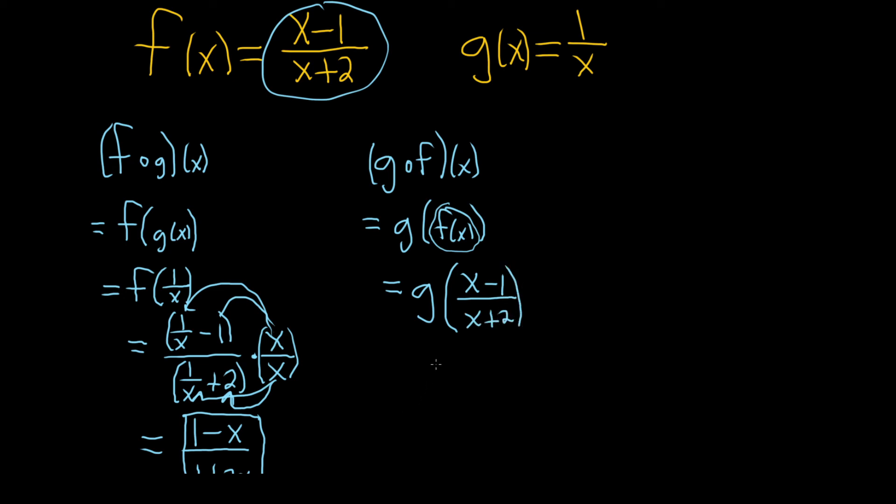And now we look at g. g of x is 1 over x. So this will be 1 over this whole thing here. So x minus 1 over x plus 2. Notice I put it in parentheses. That's really important in a problem like this. It's one thing.